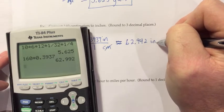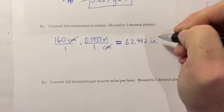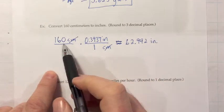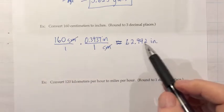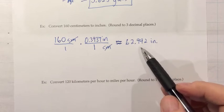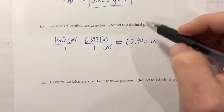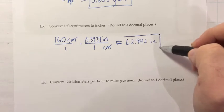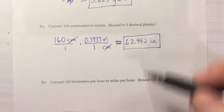62.992 inches. And I said earlier, maybe this would be a snowboard. It might also be somebody's height, 160 centimeters tall. And that would mean 63 inches roughly, which would be five foot three. So that's a conversion you could do to get a height or a length from one system to the other.